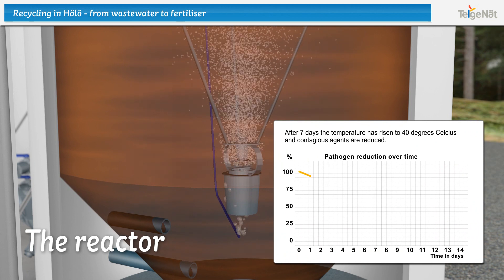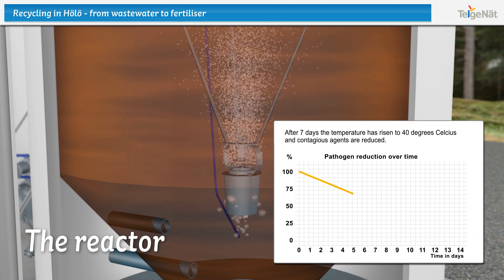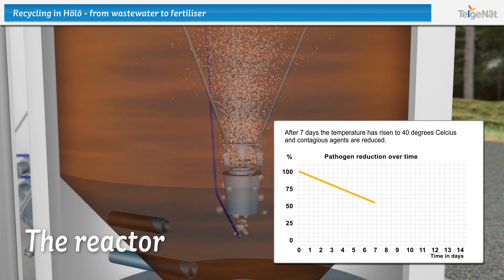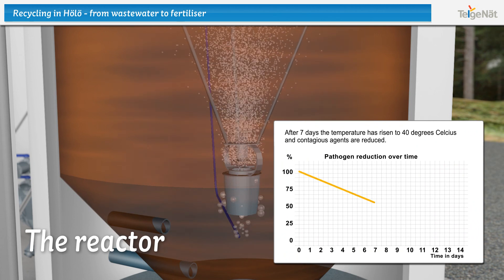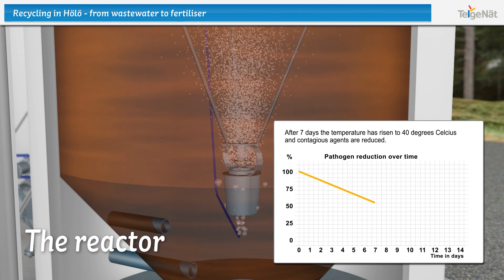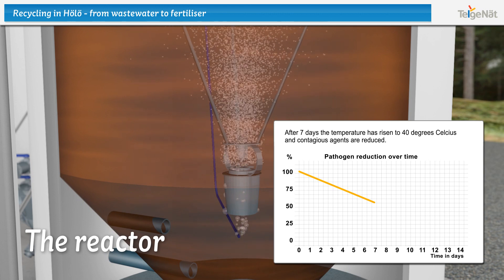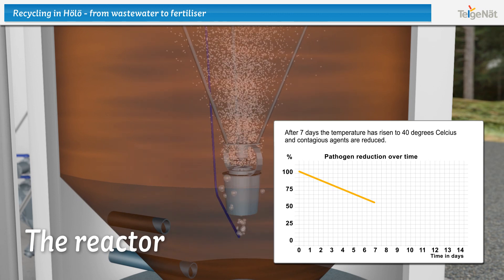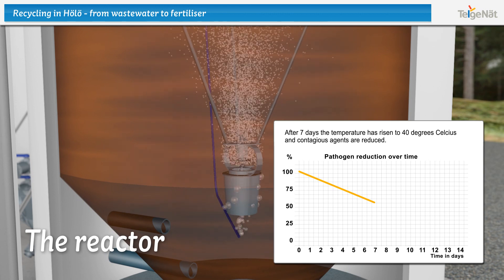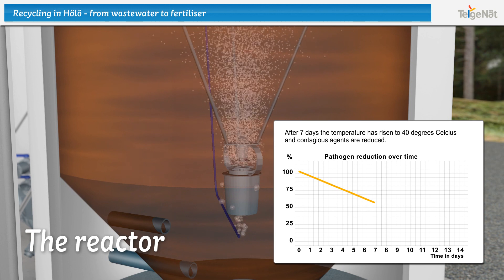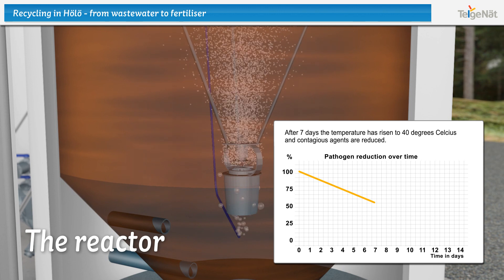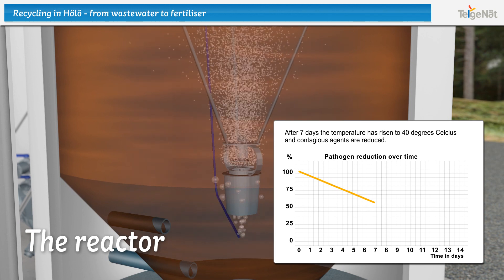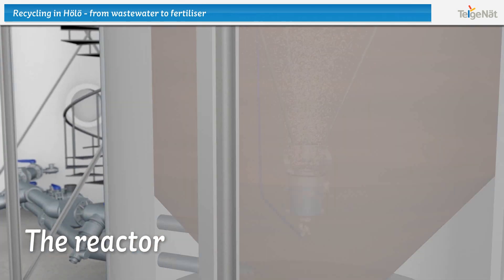After seven days, the temperature has risen to approximately 40 degrees Celsius and any contagion agents, such as Salmonella, E. coli and Enterobacterium, have been reduced by about 40%.